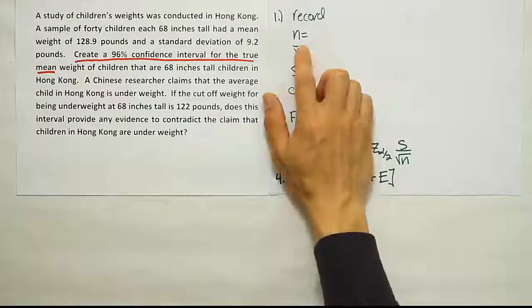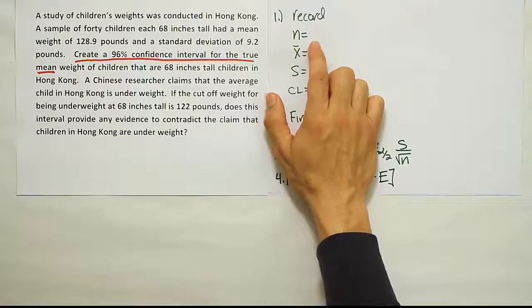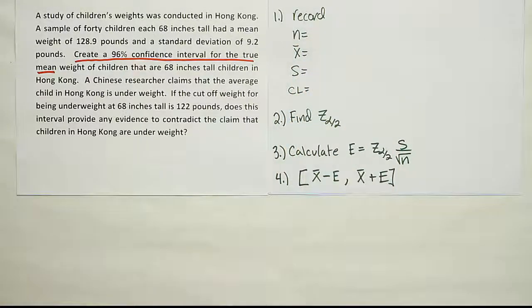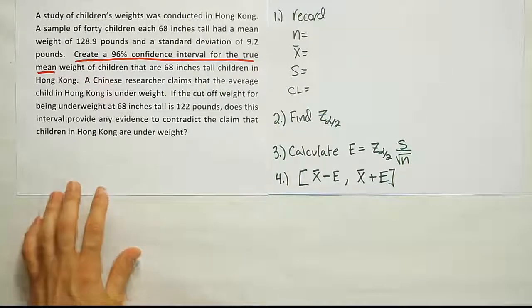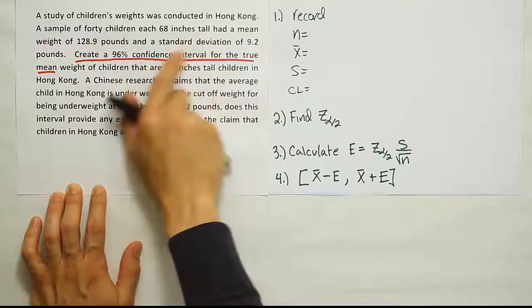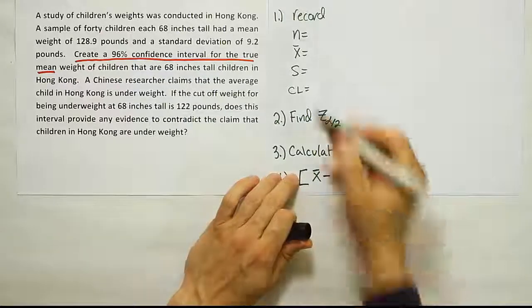Let's start with the first step, which is to record the information from the problem. So let's get the n, the sample size involved in the study, then the sample mean, the standard deviation, and the confidence level. So when I go to fill this in, I say that a sample of 40 children, each 68 inches tall, had a mean weight of. So a sample of 40 children, that 40 is our n, right? That's our sample size.